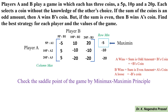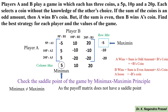Next, we calculate the minimax. We determine the column maximum values: first column elements are -5, 5, 5 — maximum is 5; second column elements are 10, -10, -20 — maximum is 10; third column elements are 20, -10, -20 — maximum is 20. Among these maximums (5, 10, 20), the minimum value is 5. So the minimax value equals 5. Since minimax (5) ≠ maximin (-5), the game does not have a saddle point.